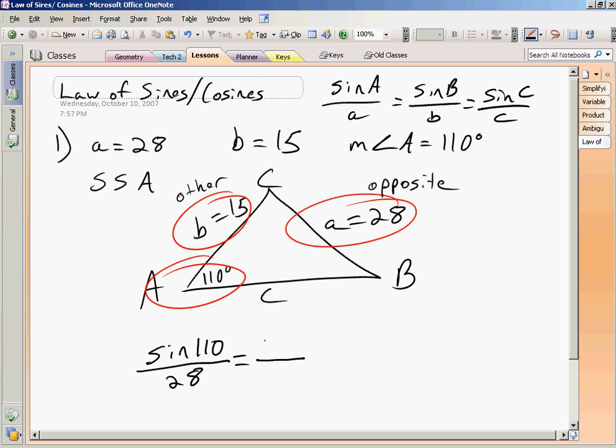So either I'm going to use sine of B over b, or sine of C over c. It wouldn't make any sense to use sine of C over c because I don't know angle C or side c. So I'm going to go with sine of B over 15. That way there's only one variable.